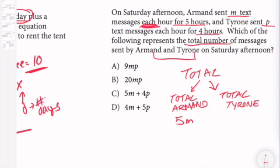Same thing for Tyrone. He sent them for four hours, and the variable we're using for him is P. Okay, so all I have to do is add these totals here. So it's 5M plus 4P.